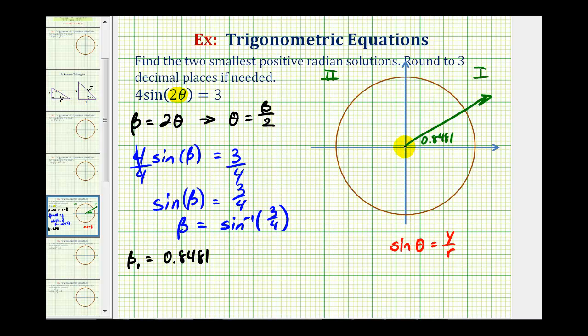Since the sine function value is also positive in the second quadrant, if we sketch a reference angle in the second quadrant of 0.8481 radians, it will have the same sine function value. Which means the angle in the second quadrant with the terminal side here, with a reference angle of 0.8481 radians, would also be a solution to our equation.